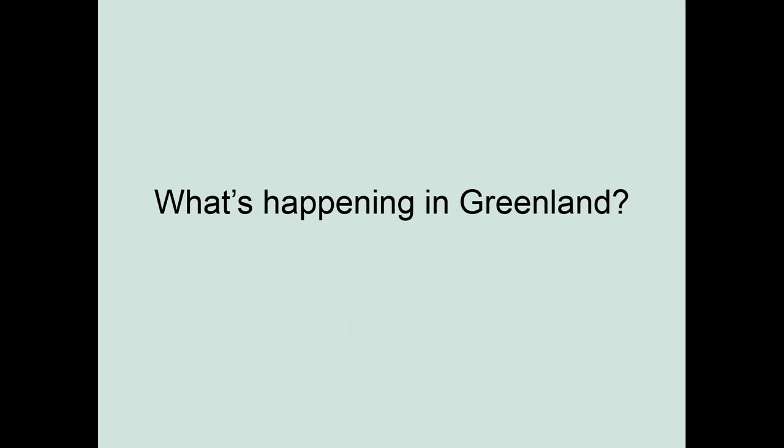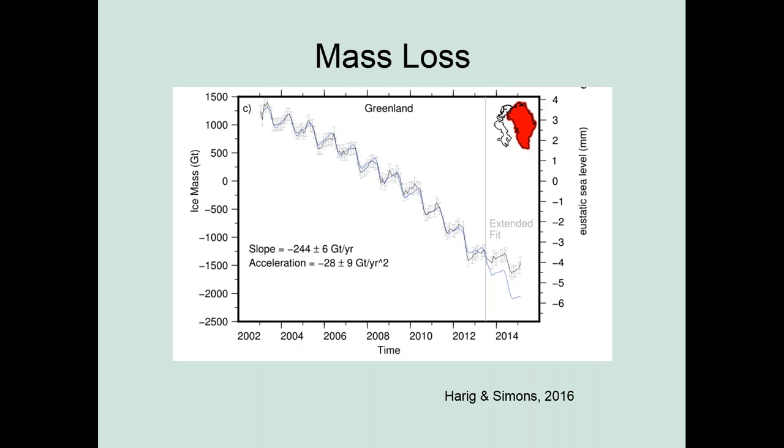For those of you who are not totally ensconced in the cryosphere world, why do we actually care about what's happening in Greenland? The short answer is that Greenland is the site of a lot of rapid changes. What we're looking at here is a plot using gravity to look at the mass loss or the mass change over time in Greenland — essentially ice that's melting. You can see here's time and mass, and we're losing mass over time. So we're losing ice from Greenland in a pretty rapid way.